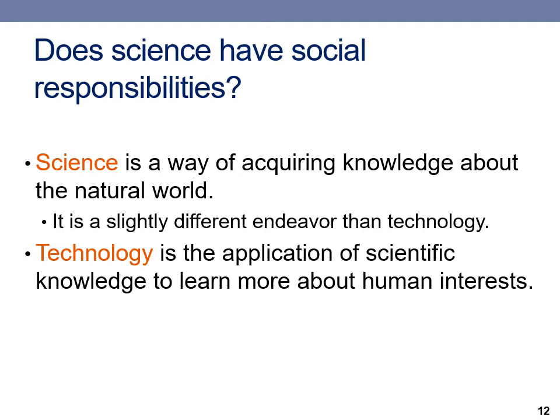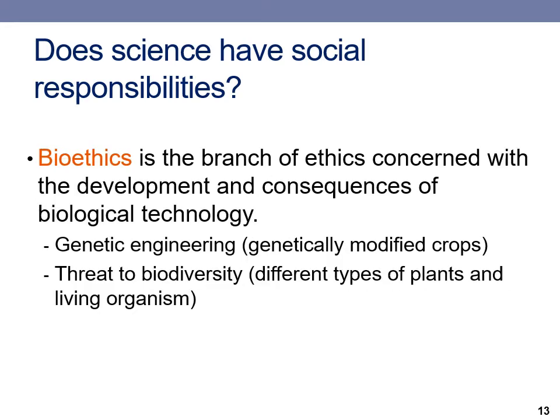Scientists should adhere to certain ethics. They should acquire and report knowledge in an ethical manner by reporting the truth while maintaining ethics as it pertains to the community. Technology is the application of scientific knowledge to learn more about our human interests. Bioethics is a sub-branch of ethics concerned with the development and consequences of biological technology. Scientists must be mindful of how their research affects the community. For example, genetic engineering of plants and animals used for human consumption is a hot topic because people wonder what effects these plants and animals may have on human health.